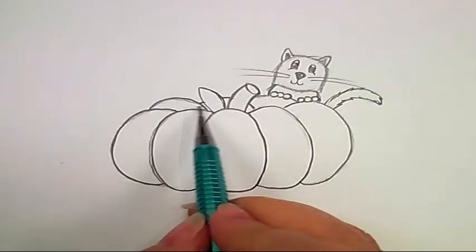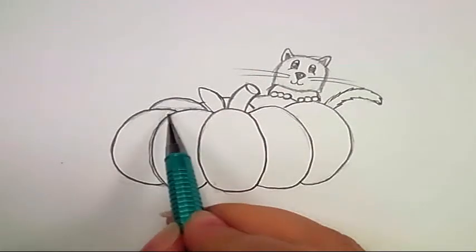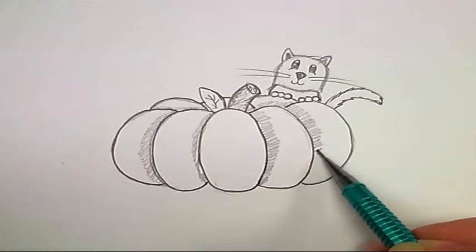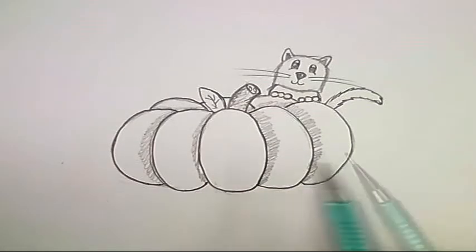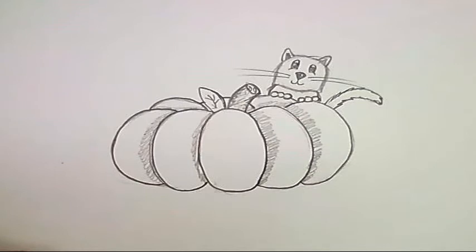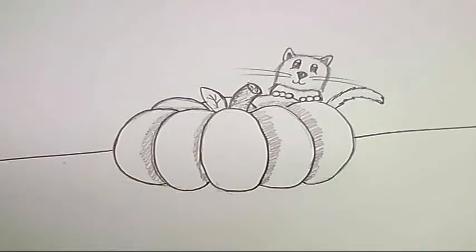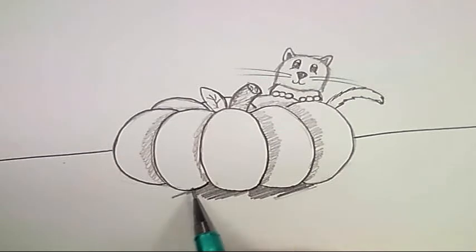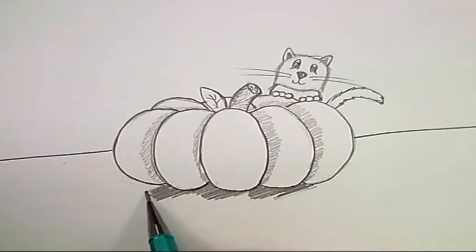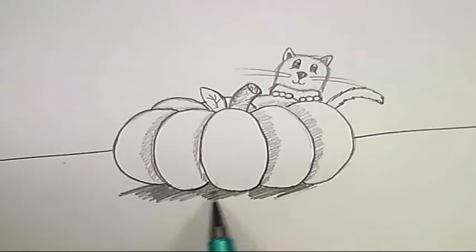All you need to do for shading is just take your pencil and shade where there's overlapping. Let's give this pumpkin a reference to where it is on the page by giving a horizon line and a cast shadow. Shade underneath this pumpkin. You could probably add a couple more pumpkins or you could put a sign, a stamp on here and say Happy Thanksgiving. You could do all kinds of things.